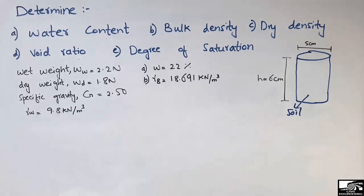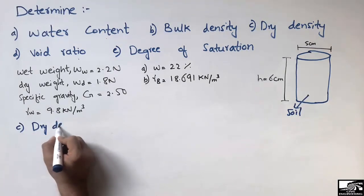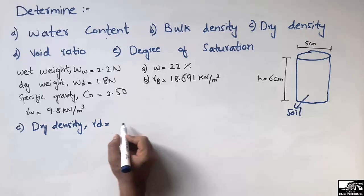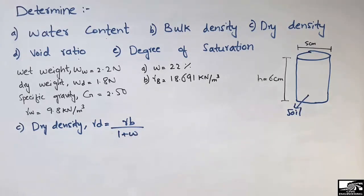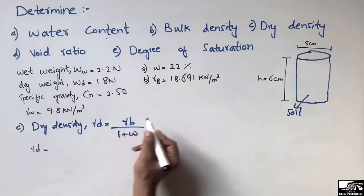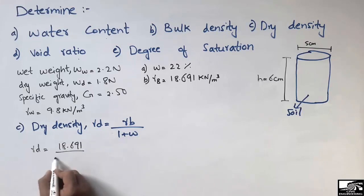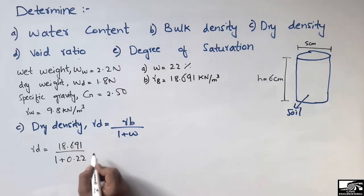Now we are going to find the dry density. The formula for dry density is: gamma d equals gamma b divided by (1 plus water content). Putting in the values: gamma b is 18.691 kilonewton per cubic meter, divided by (1 + 0.22), since the water content is 22 percent, which equals 0.22.